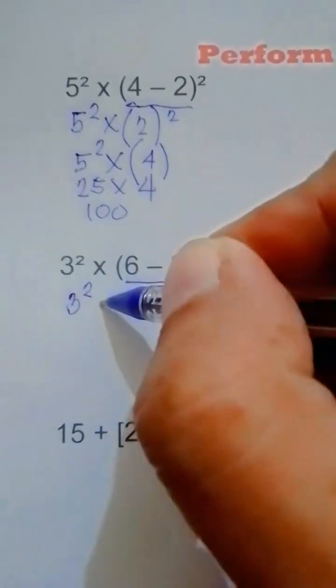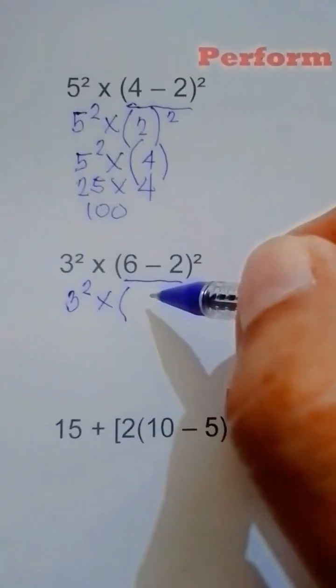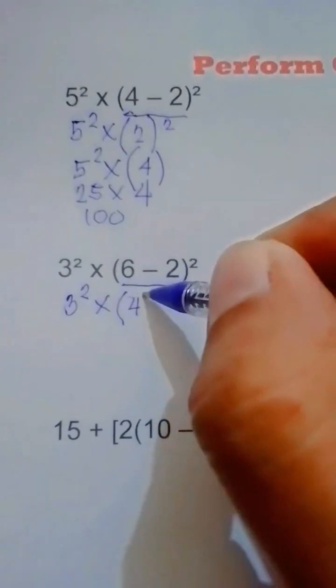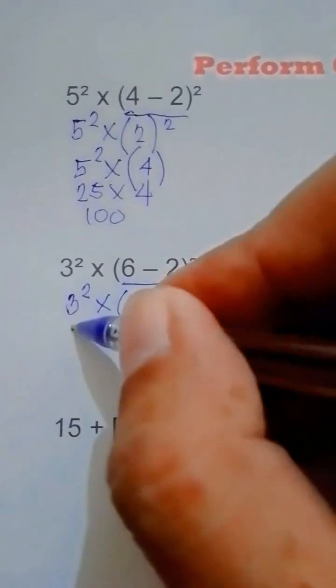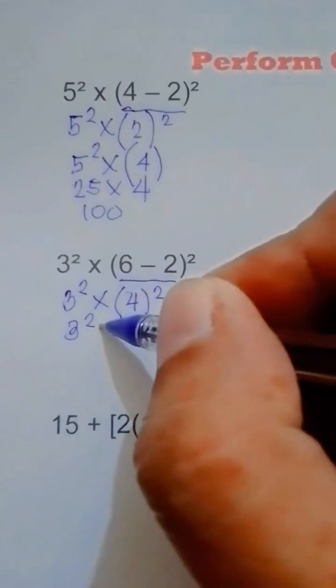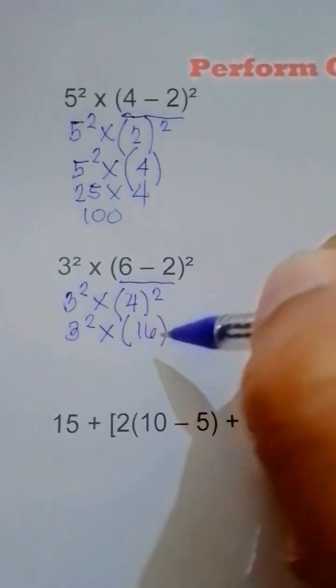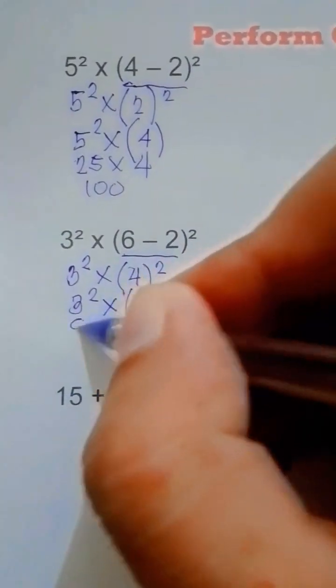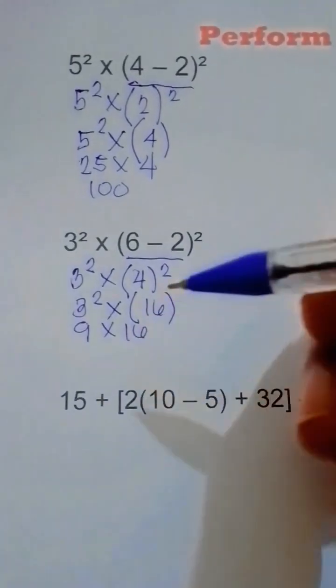You have to write first the parenthesis. 6 minus 2 equals 4, 4 raised to the second power. Then 3 squared copy, then times 4 squared is 16. So 3 to the second power is 9, then 9 times 16.